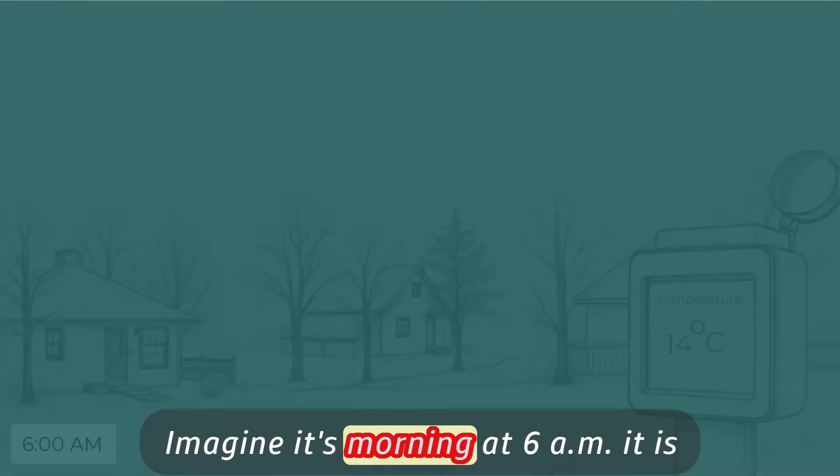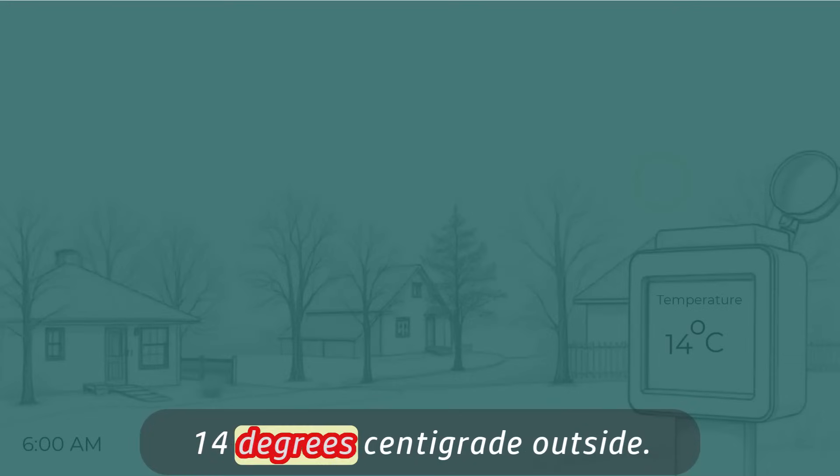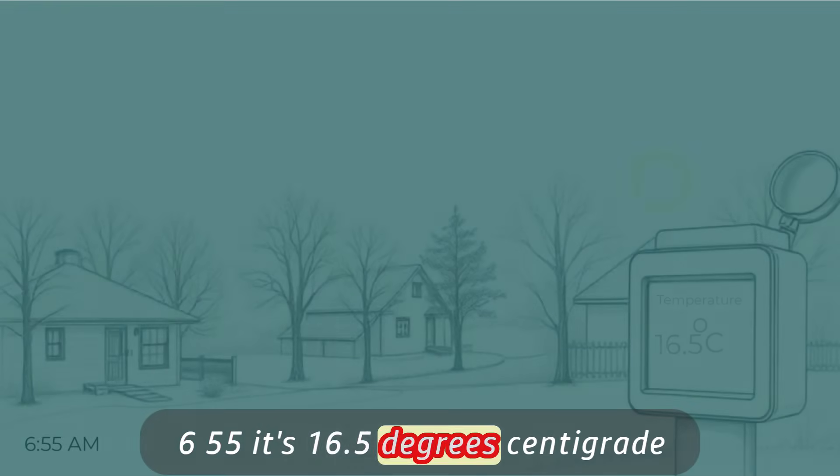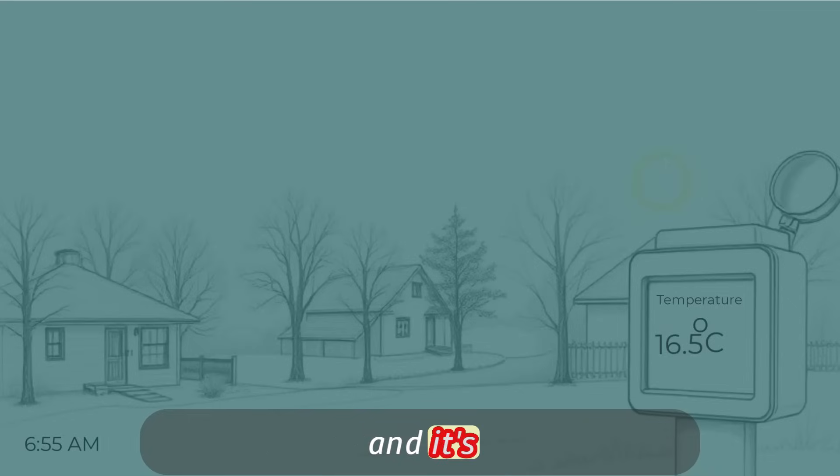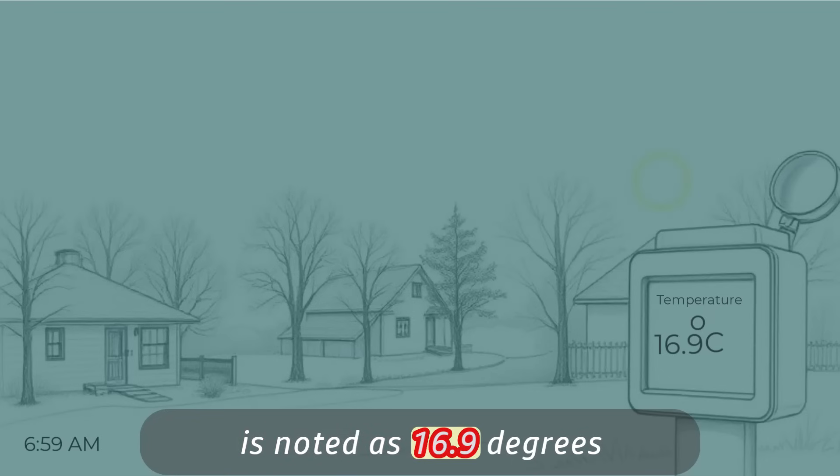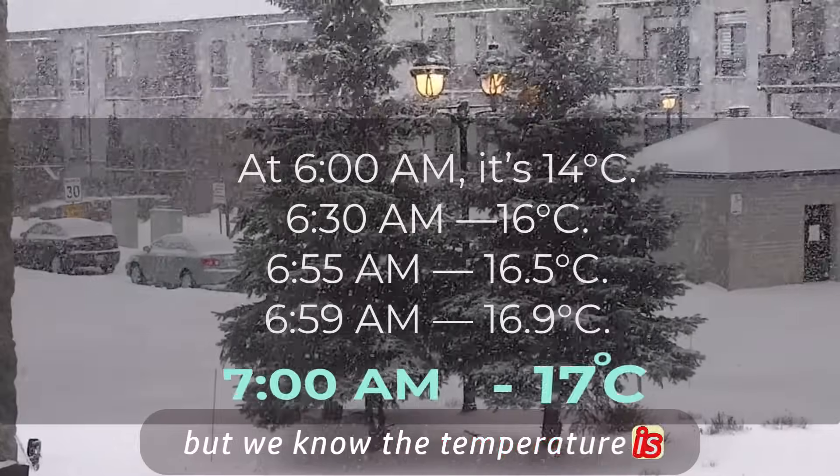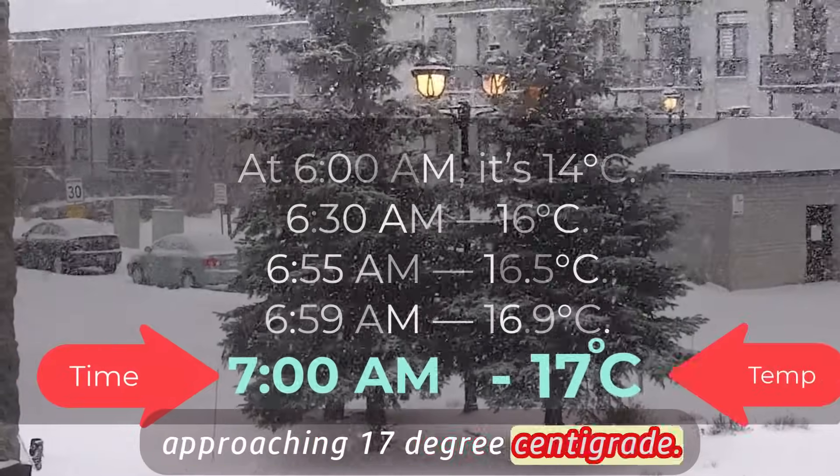Imagine it's morning. At 6 a.m., it is 14 degrees centigrade outside. 6:30 a.m., it is 16 degrees centigrade. 6:55, it's 16.5 degrees centigrade. We don't have data at 7 a.m., but we know the temperature is approaching 17 degrees centigrade.